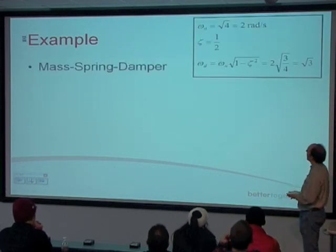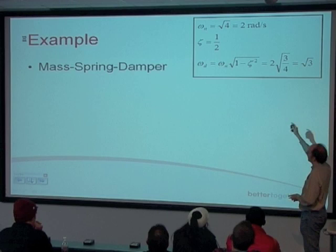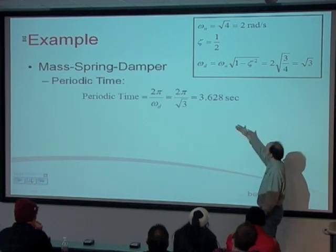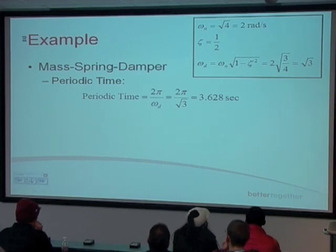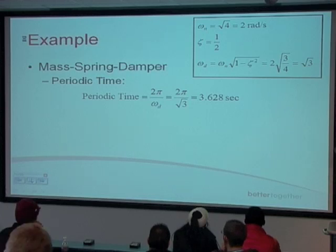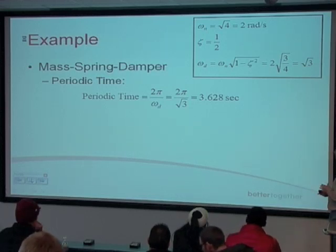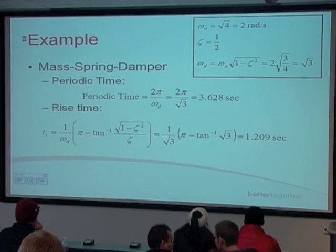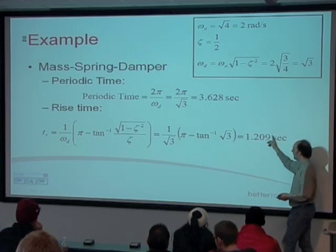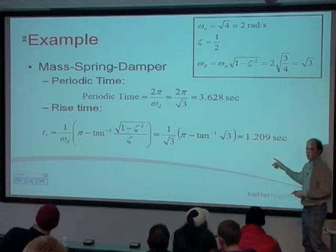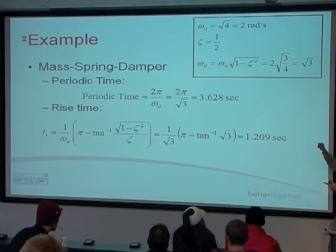Now we have these values, we can work out the various performance criteria. Periodic time is two pi over omega_d, which is two pi over root three, giving 3.628 seconds — every 3.628 seconds you get one oscillation. For the rise time, using our equation with the values plugged in, you get 1.209 seconds — that's how long it takes to go from zero to the final value.